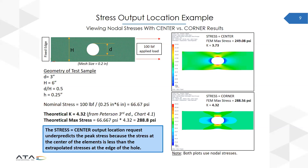With the center stress request, stress was only reported at the center of those elements around the perimeter of the hole — so we weren't getting a stress result at the edge of the hole, but slightly offset from it. Whereas with the corner stress request, the extrapolated stresses at the edge of the hole were computed and made available in the post-processor, allowing us to report the peak stress at the edge of the hole and obtain an accurate stress prediction. This is a warning of the potential danger of requesting center stress output when corner stress output is needed.